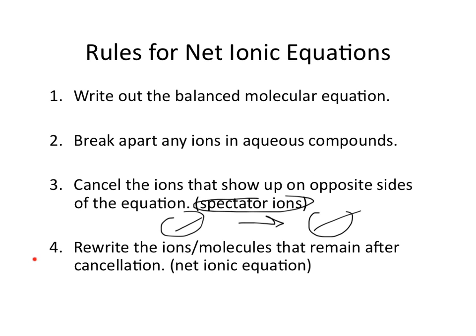Step number four, after you've done your canceling, you rewrite the ions and molecules that remain after you've done the cancellation. So basically you write whatever hasn't been crossed out. And this will give you your overall net ionic equation. Basically, a net ionic equation is the equation without the extra stuff or minus those items that are not important.